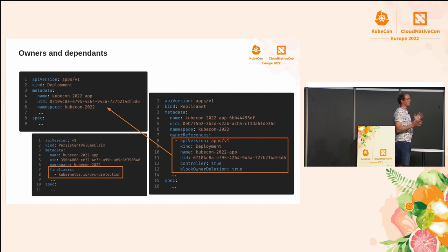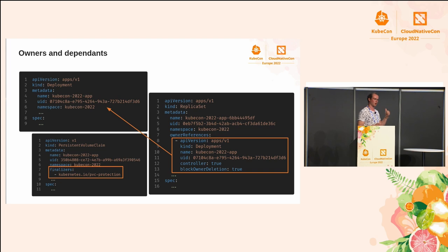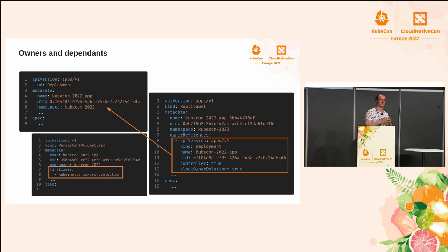Then we have another concept that works hand in hand with owners and dependents: finalizers. You don't have to specify an owner or dependent in finalizers, but a finalizer needs to be clever enough to determine these relations. You usually see this with persistent volumes and persistent volume claims, where you can start deleting a persistent volume claim or persistent volume even if it's mounted to a pod. The persistent volume claim will stay in terminating state until the pod gets deleted — ensured by the finalizer — even though there's no explicit owner reference showing the pod owns the persistent volume claim.